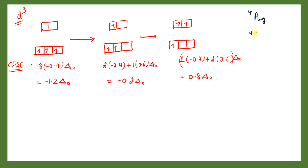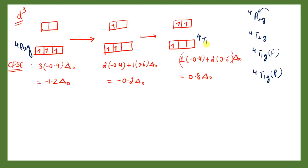Now we assign the Mulliken terms. Since 'A' is used for non-degenerate and 'T' for triply degenerate: the non-degenerate level is assigned 4A2g. The triply degenerate level at −0.2Δ₀ is assigned 4T1g(F), the next triply degenerate is 4T2g, and the highest level from the 4P term is assigned 4T1g(P).